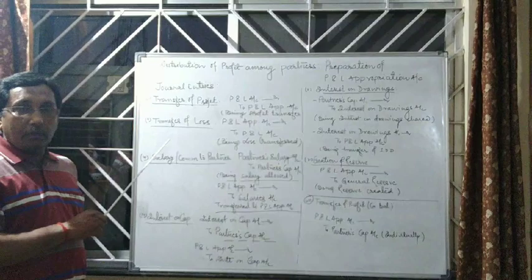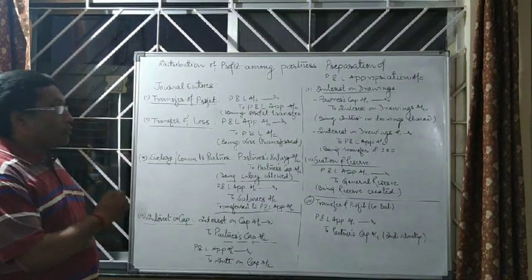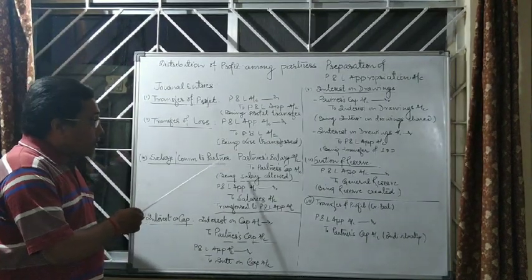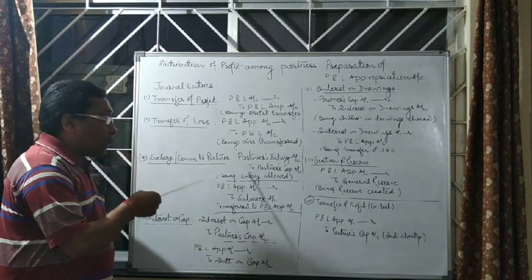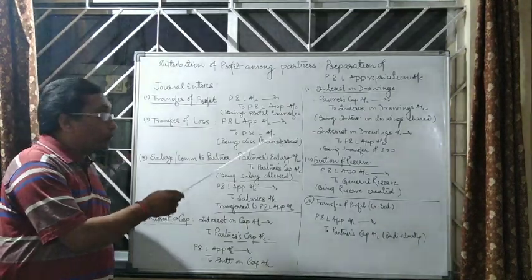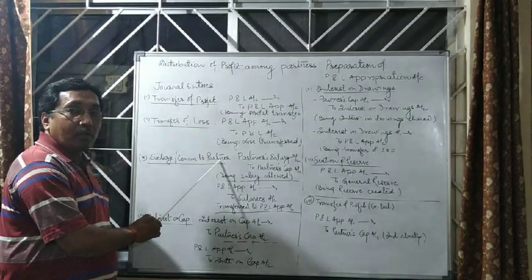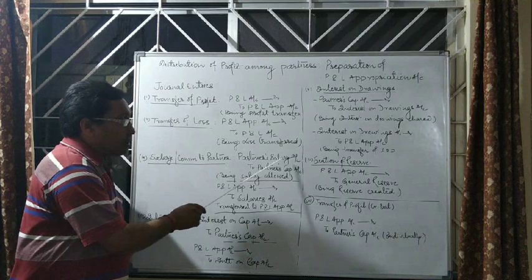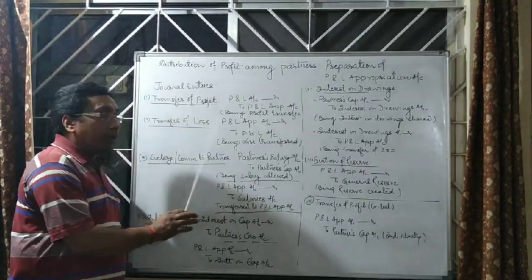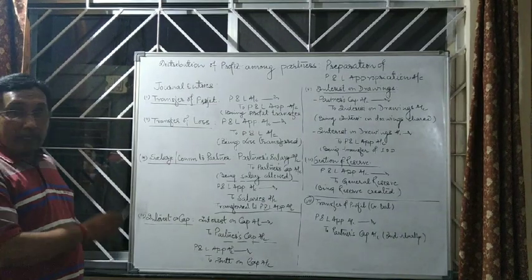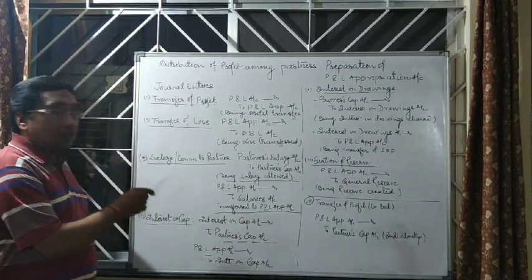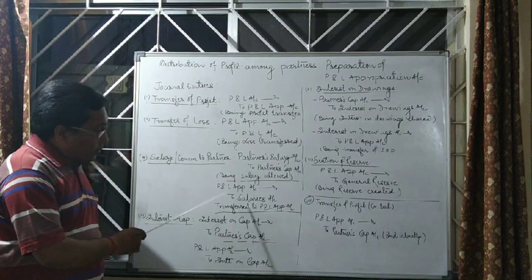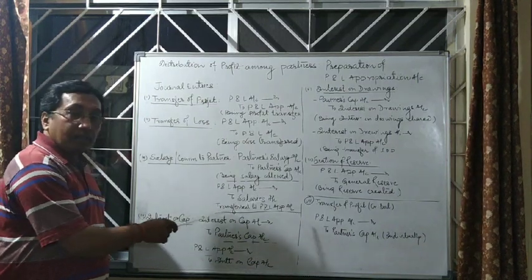This is appropriation of profit. If profit is available, we can allow salary to a partner and we can allow commission to a partner. See the entry: because this amount is to be allowed to partners and salary is an expense from the firm's point of view, it is a nominal account and this amount should be credited to partners' capital account. Hence, partners' salaries account debit to partners' capital account. And the closing entry will be: profit and loss appropriation account debit to salaries account.